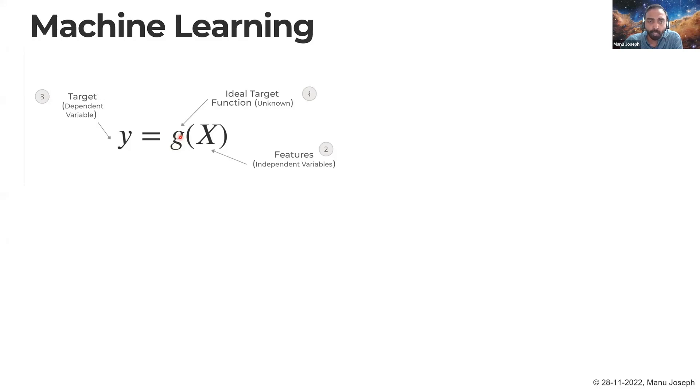But in most real-world cases, you don't know what g is. G is an unknown function, because if it's a known function, there's no reason for learning at all. If it's a square, you just code it up. But most cases, we don't know what it is. So this is where machine learning comes in.